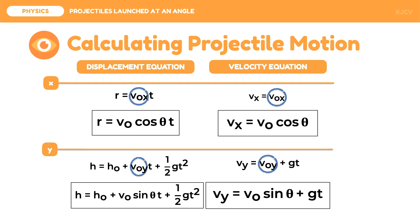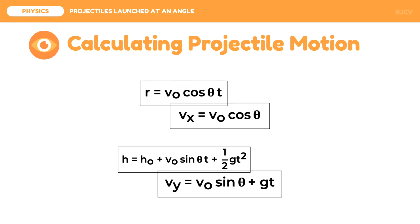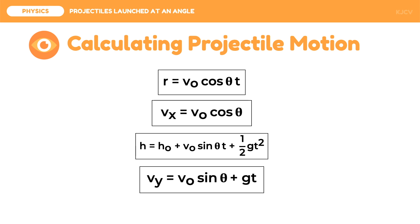These four equations can be used for projectiles launched horizontally even if they contain an angle of release. For projectiles launched at an angle, just use the angle of release for theta. For projectiles launched horizontally, just use 0 as the angle of release for theta, since 0 degrees means a horizontal launch of a projectile.